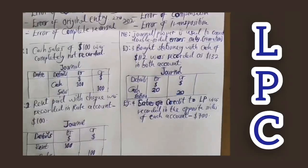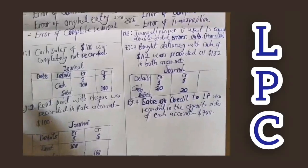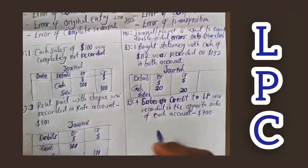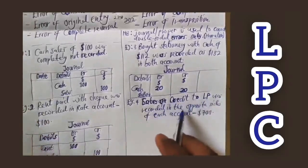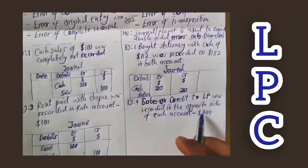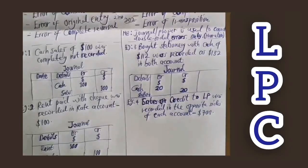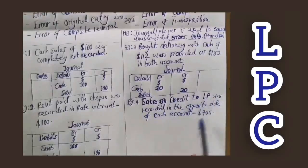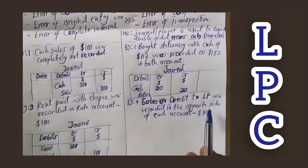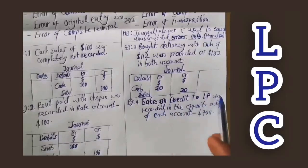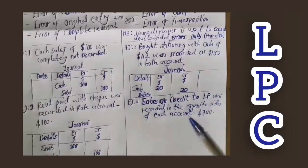Example four: sales on credit to LP of $700 was recorded on the opposite side of each account. Which error is this? It should have been recorded at the debit side of LP but was recorded at the credit side, and sales should have been credited but was debited instead. When the double entry is recorded on the opposite side of each account, it is an error of complete reversal. To correct it, use the journal.